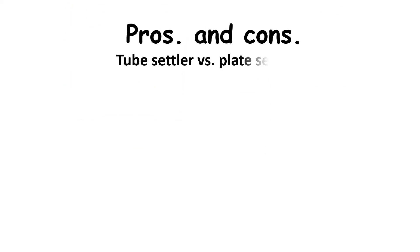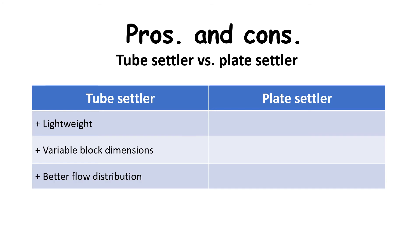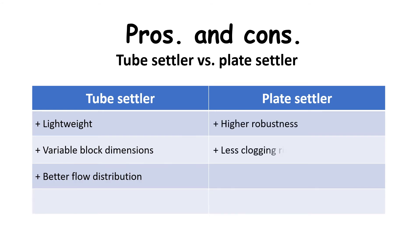Advantages of plate settlers are, in general, better product robustness and less risk of clogging because of larger settling planes. Also, plate settler modules can be made higher compared to tube settler blocks, which can reduce the required footprint of new clarifier basins.